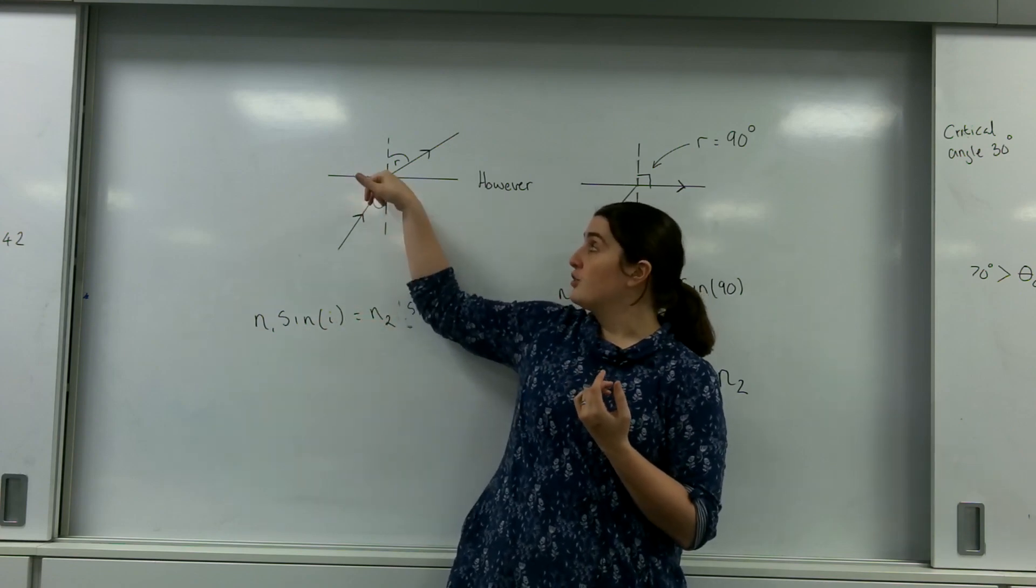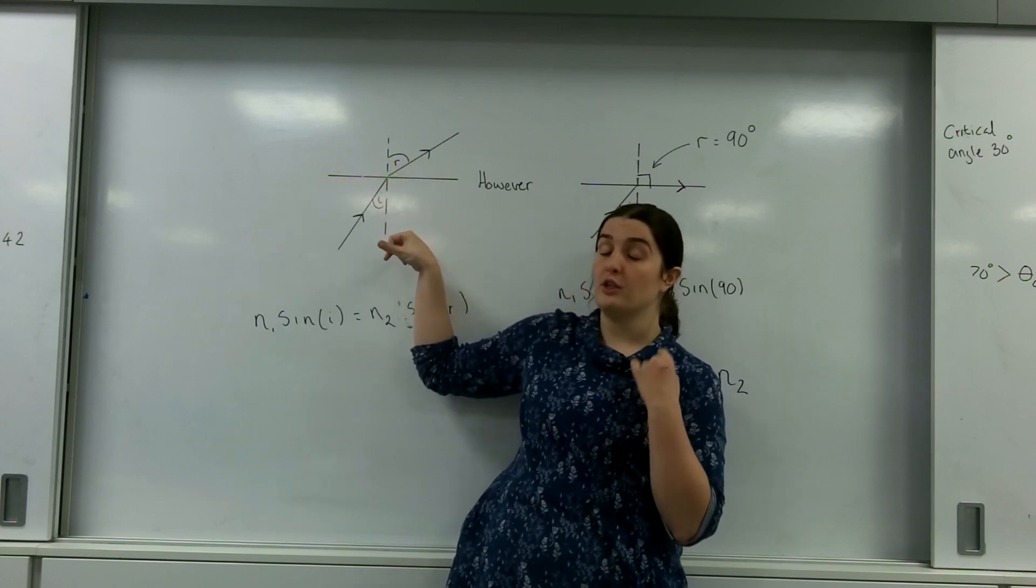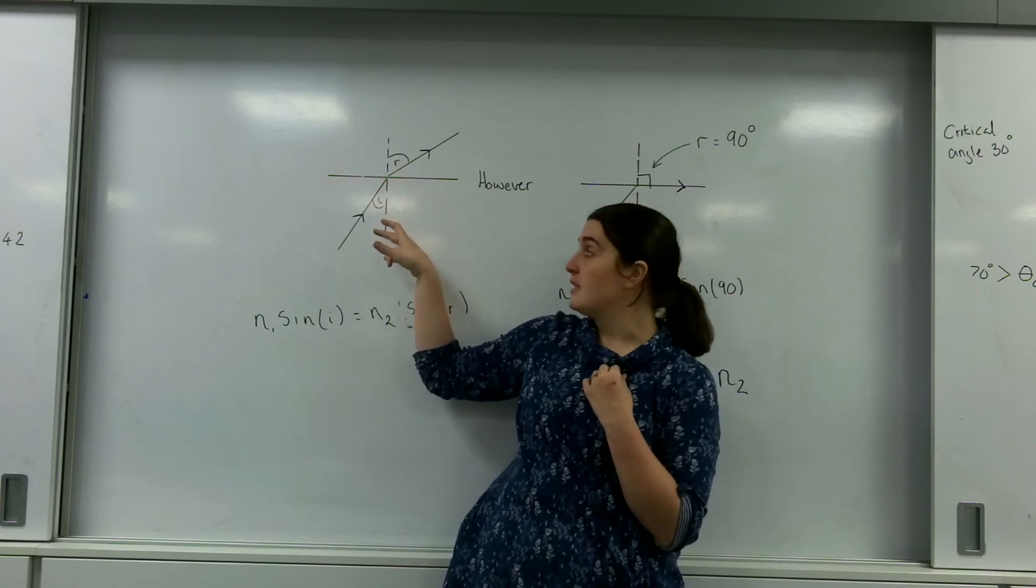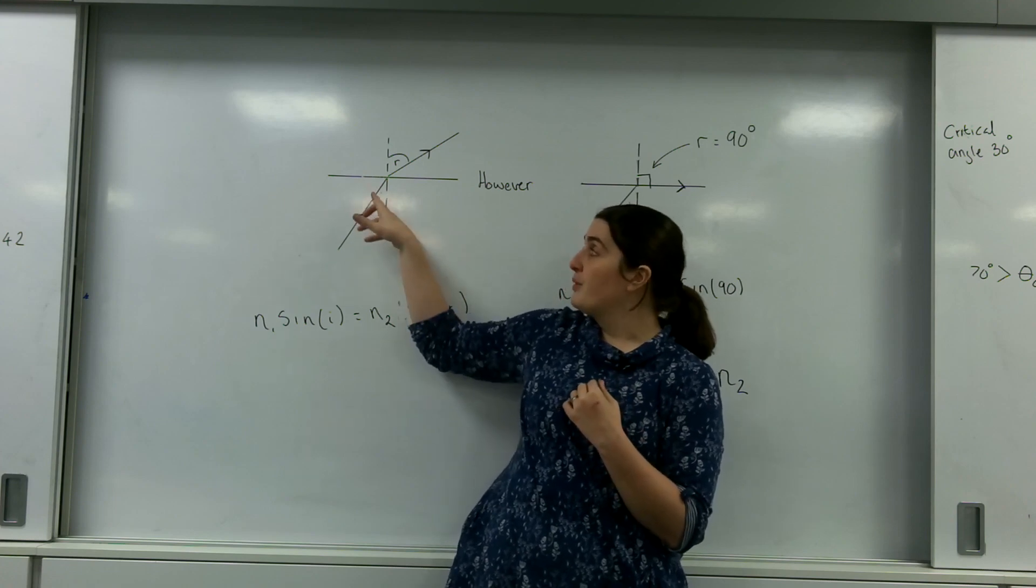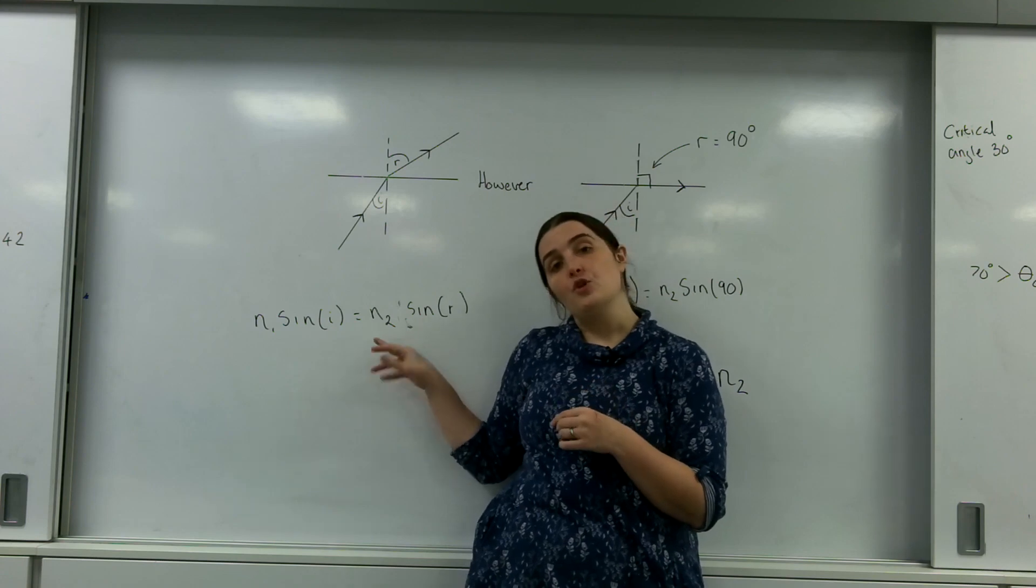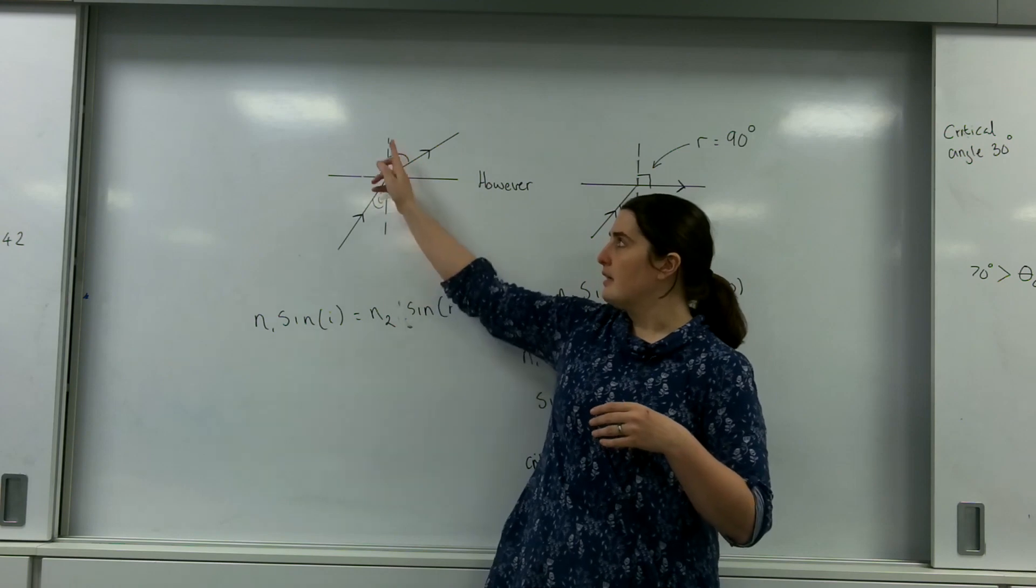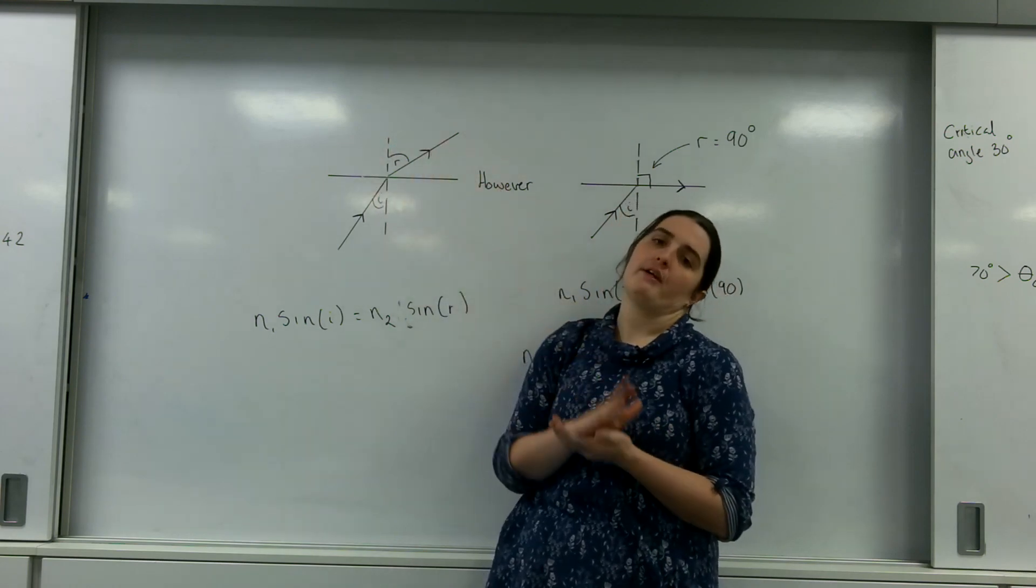This angle here. So the angle, here's the surface, this is the normal line you must draw, and that's at right angles to the surface. It's the angle from the light ray to this normal angle, and that's I. N2 is the refractive index of the material I'm going to, and R is the angle from the normal to the light ray.